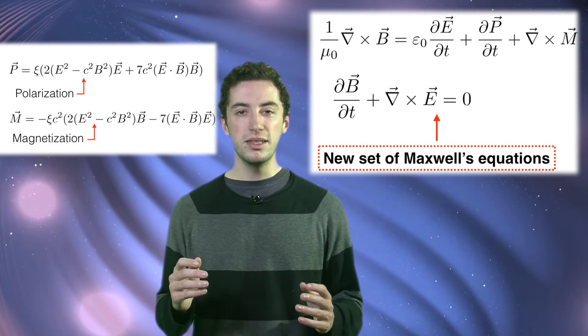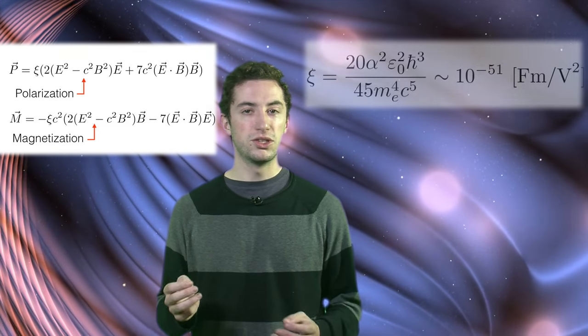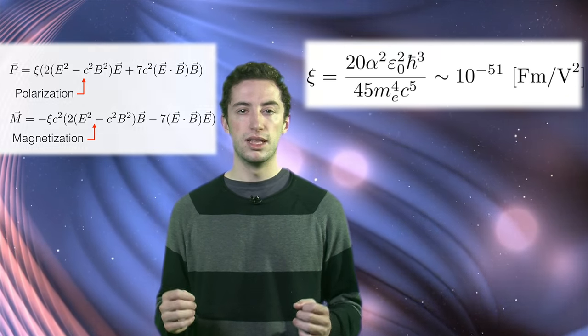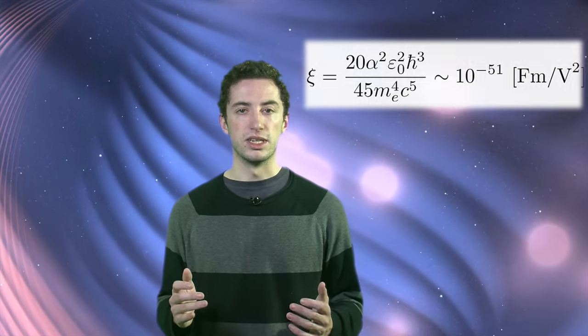Furthermore, the parameter that weighs the relative importance of the corrections is chi, which is of the order of 10 to the minus 51. This is indeed very, very small. Therefore, looking at the new equations, it is clear that very large fields are still necessary to make these quantum corrections important.